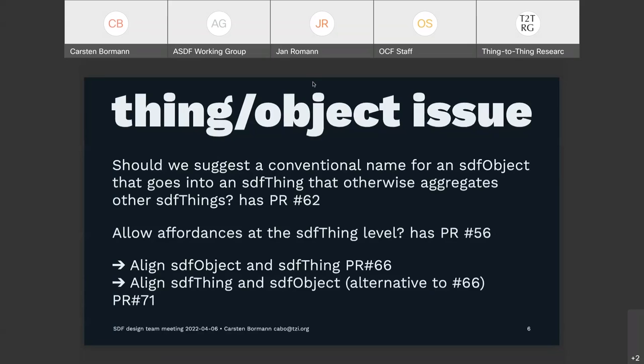That's absolutely correct. The alternative was to imbue the capabilities of SDF object to SDF thing, but not do the other direction — so SDF thing can do everything SDF object can do, but SDF object cannot contain things. That's pull request 71. We essentially have to decide between do nothing, do pull request 71, and do pull request 66. The agreement with Walter was that if we make mandatory changes, it already has substantial impact on an existing body of work. So what we wanted to do was prefer the thing that didn't disrupt OneDM's ability to have definitions still look like they did with objects.